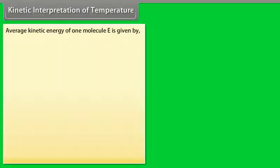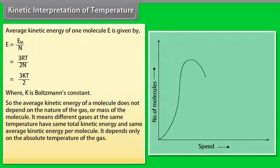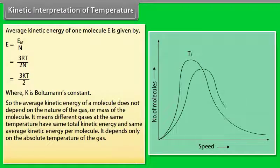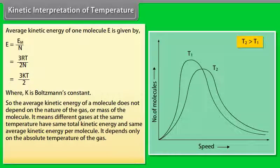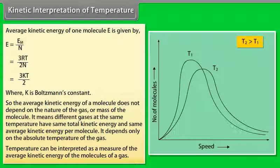Kinetic interpretation of temperature: Average kinetic energy of one molecule E is given by E equals Em upon N equals 3RT upon 2N equals 3KT by 2, where K is Boltzmann's constant. So the average kinetic energy of a molecule does not depend on the nature of the gas or mass of the molecule. It means different gases at the same temperature have same total kinetic energy and same average kinetic energy per molecule. It depends only on the absolute temperature of the gas. Temperature can be interpreted as a measure of the average kinetic energy of the molecules of a gas.